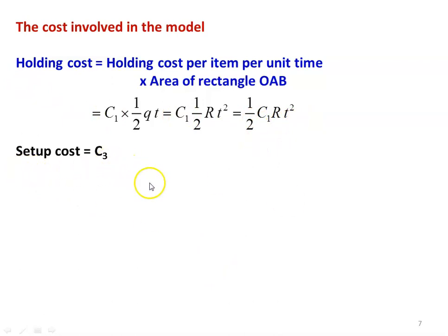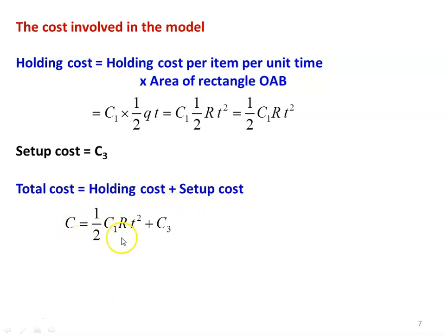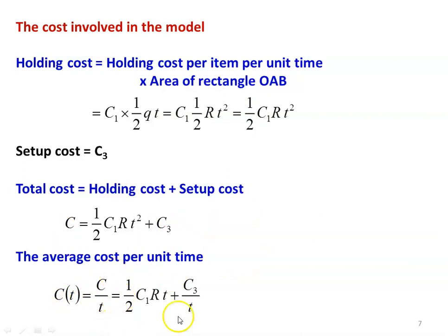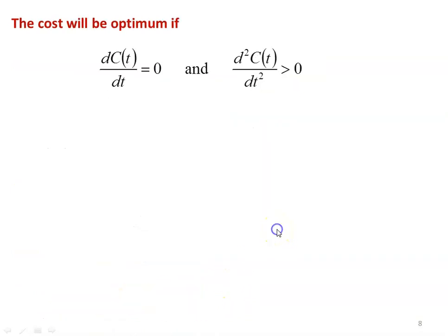The total cost C equals one-half C1 R T squared plus C3. The average cost per unit time is C divided by T, giving one-half C1 R T plus C3 divided by T. To optimize, we differentiate with respect to T and set equal to zero. The cost is optimum when dC/dT equals 0 and d²C/dT² is greater than zero (positive). Differentiating: dC/dT equals one-half C1 R minus C3 divided by T squared. The second derivative equals 2C3 divided by T cubed, which is positive.